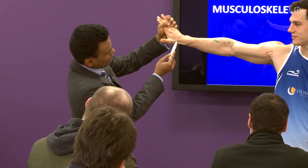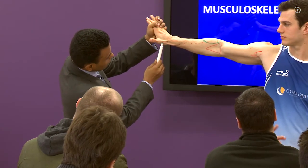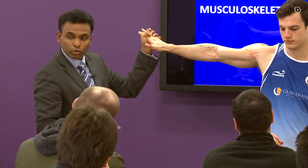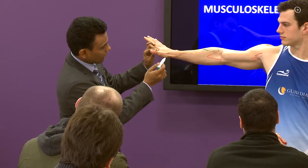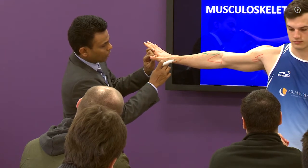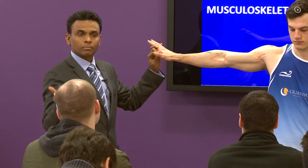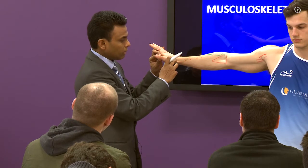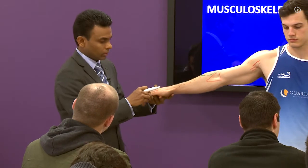So extensor pollicis longus on the ulnar side, extensor pollicis brevis, and abductor pollicis longus — those are the boundaries of the snuff box. The important structures within are the superficial branch of the radial nerve, the radial artery (which is deep), and the cephalic vein.